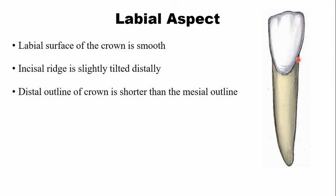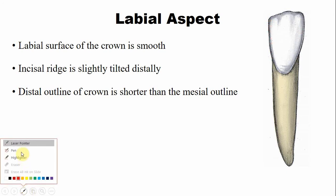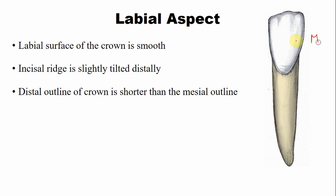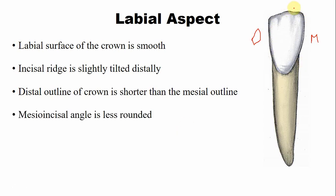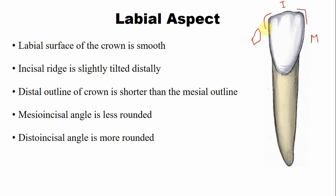The mesial outline is larger compared to the distal outline. The mesial incisal angle is slightly rounded, while the distal incisal angle is more rounded. This is the incisal surface, and this is the distal incisal angle, which is more rounded than the mesial incisal angle.